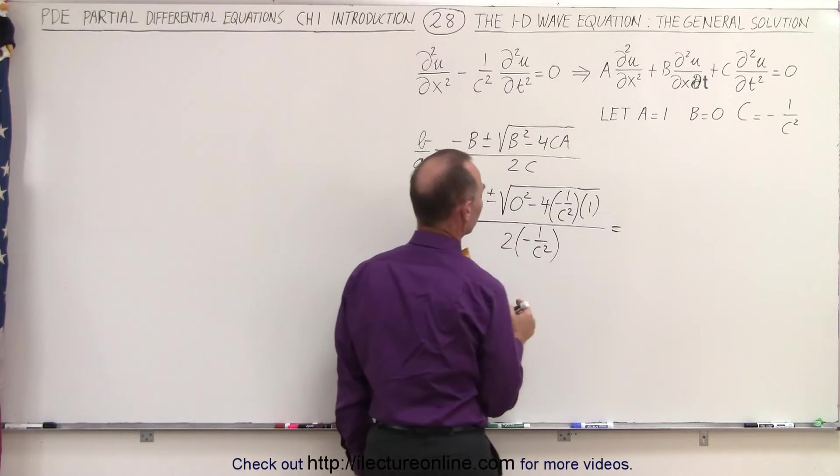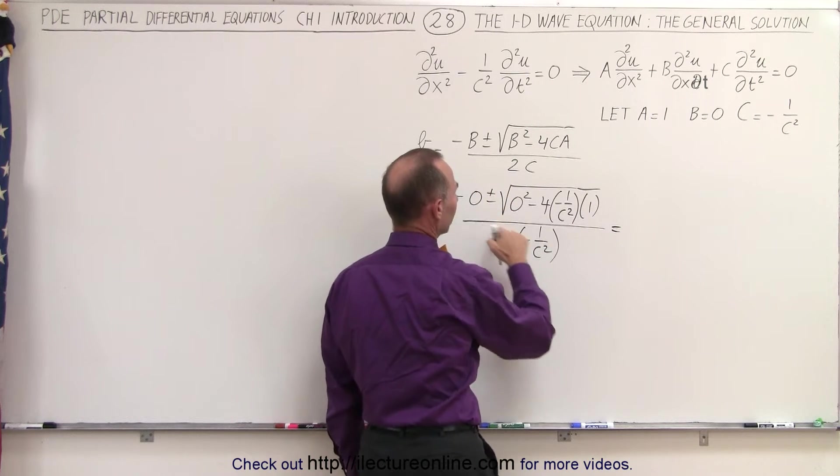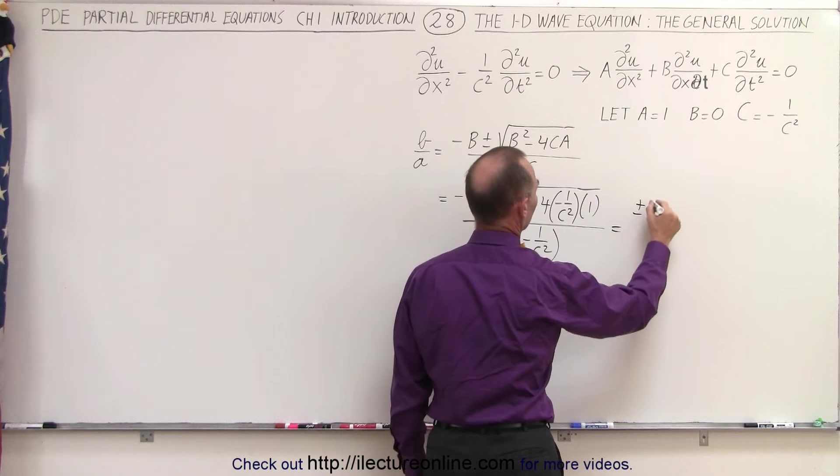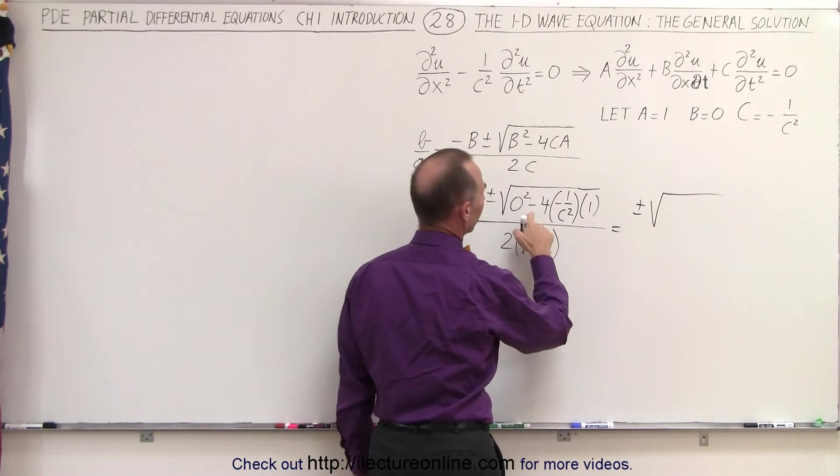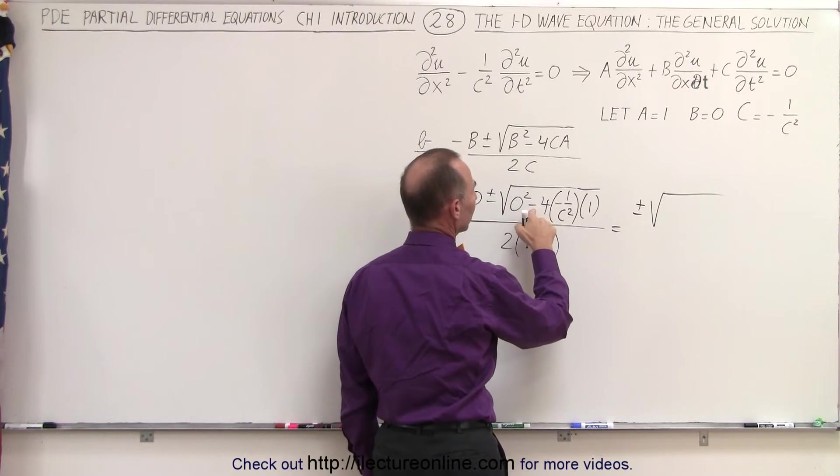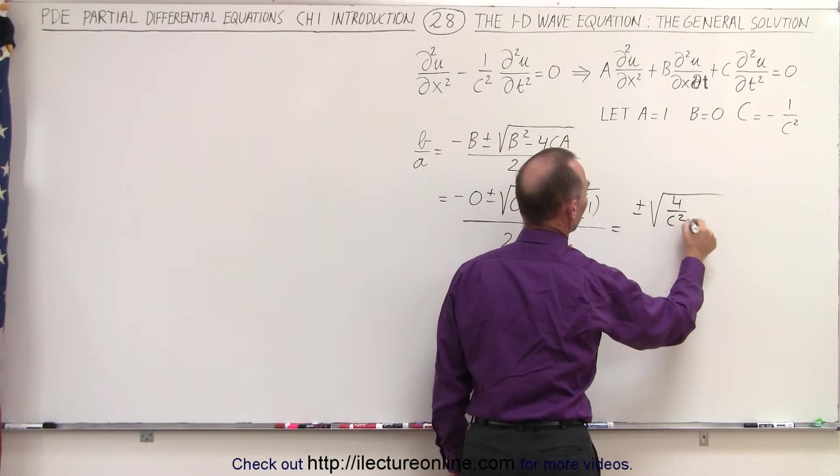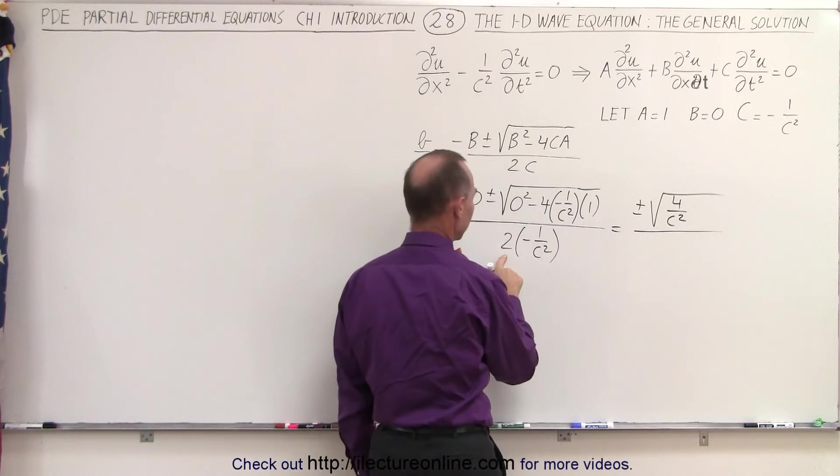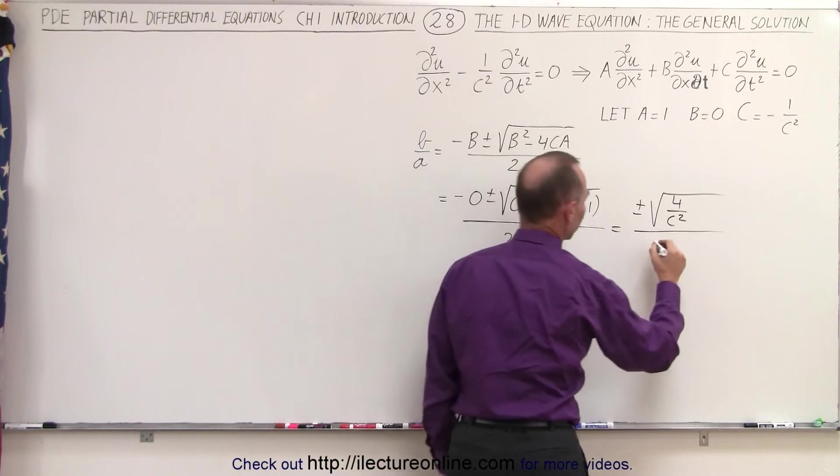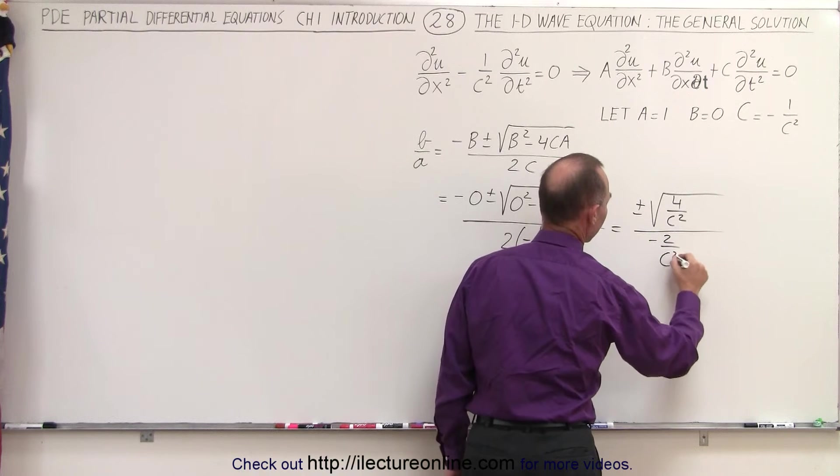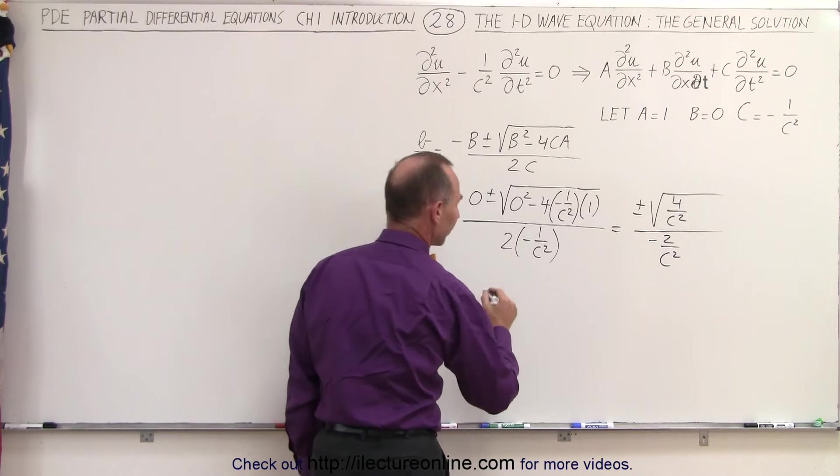This becomes equal to, this is 0, so we have plus or minus the square root of, that would be minus times the minus is plus, so we end up with a 4 over c squared, all divided by minus 2 over c squared.